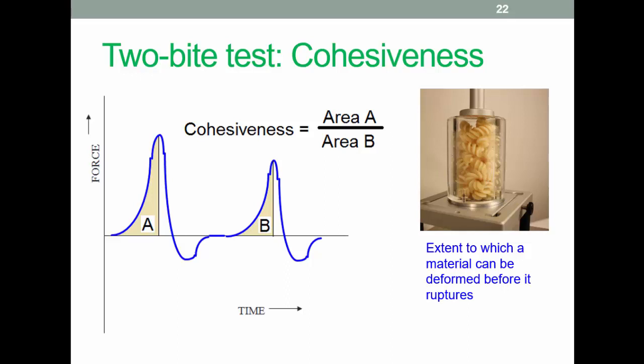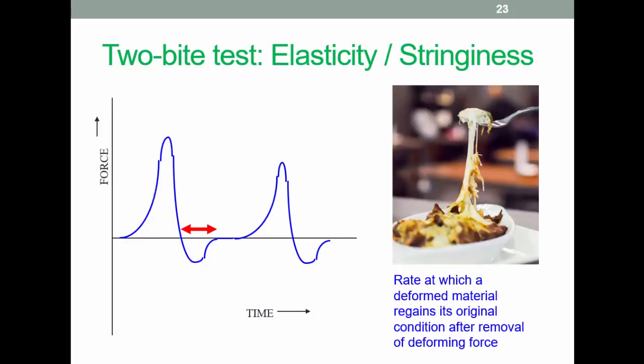Stringiness, elasticity, bounce-back ability. When the deforming force from the probe is released, how quickly does the food regain its original condition is what we're interested in here. So there's an example there of lasagna or something similar.